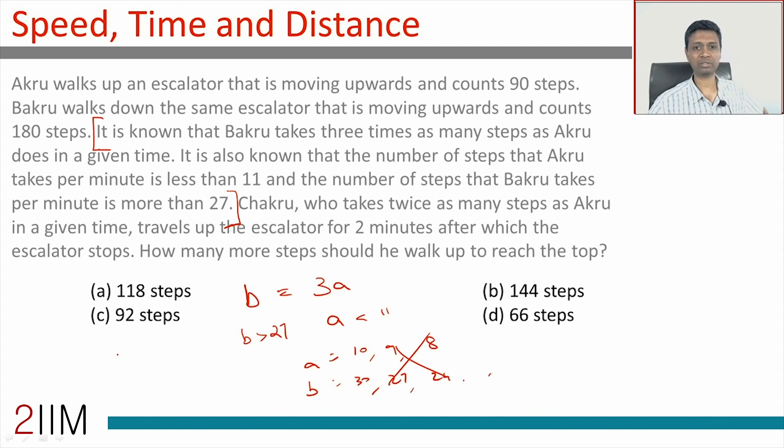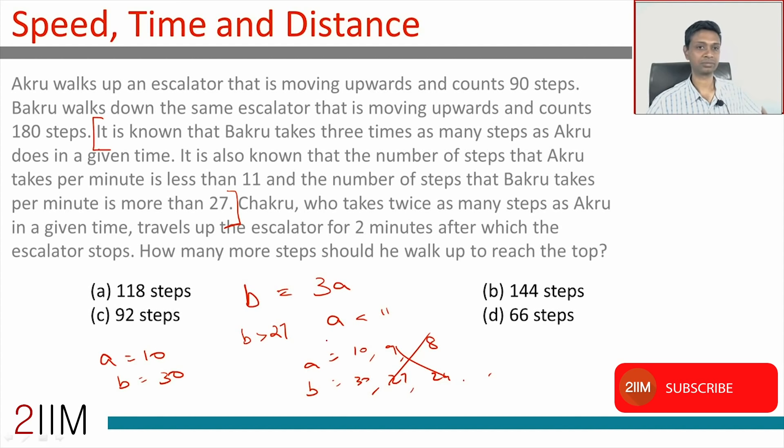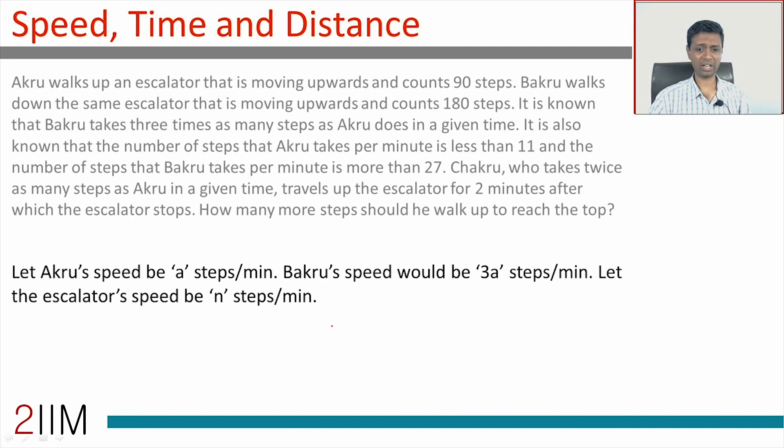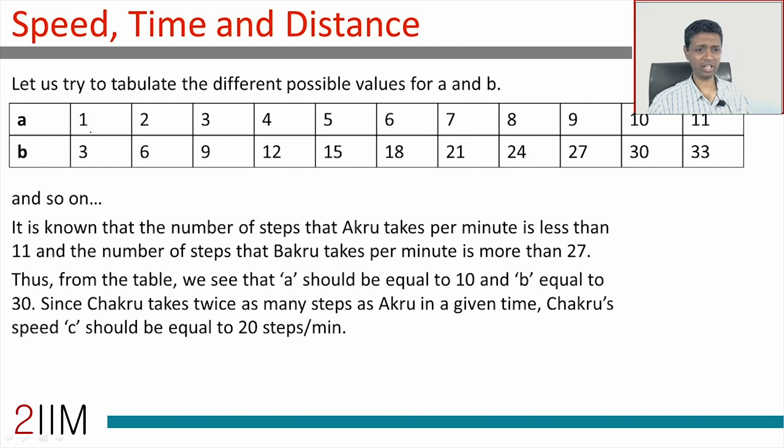This whole story here, it's an elaborate story which tells us A is 10, B is 30. A should be less than 11, B should be more than 27. It all tells us that A is 10, B is 30. I'm going to go back to the digital version. You just say A is Akru travels at A, Bakru travels at 3A. Let the escalator speed be N steps per minute. 1 and 3, 2 and 6, 3 and 9, all of these are possible. 9 and 27, 10 and 30, 11 and 33. The 10 and 30 is the only feasible solution. We know that, I will keep that in mind.